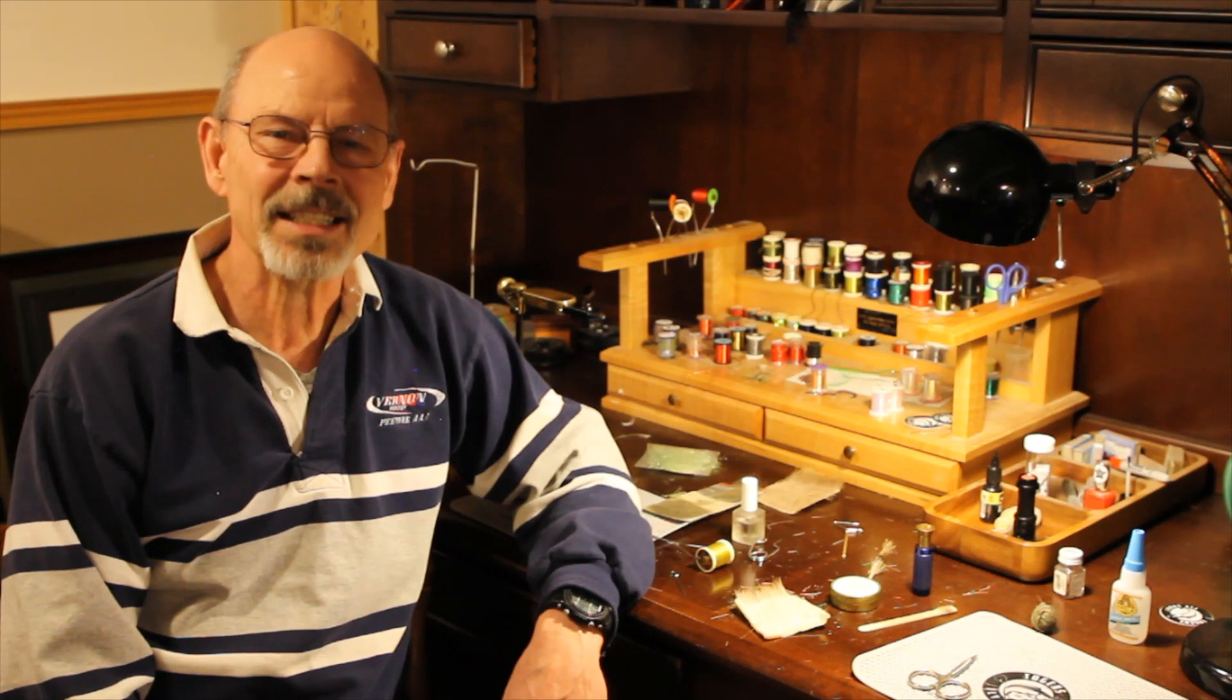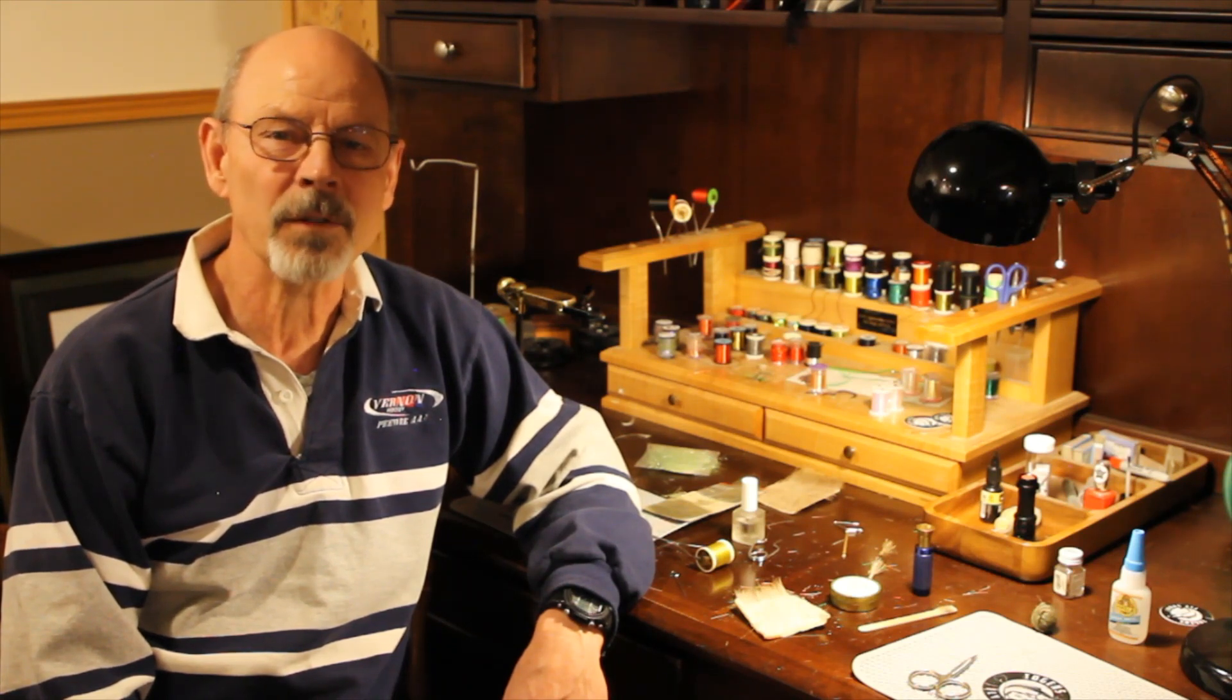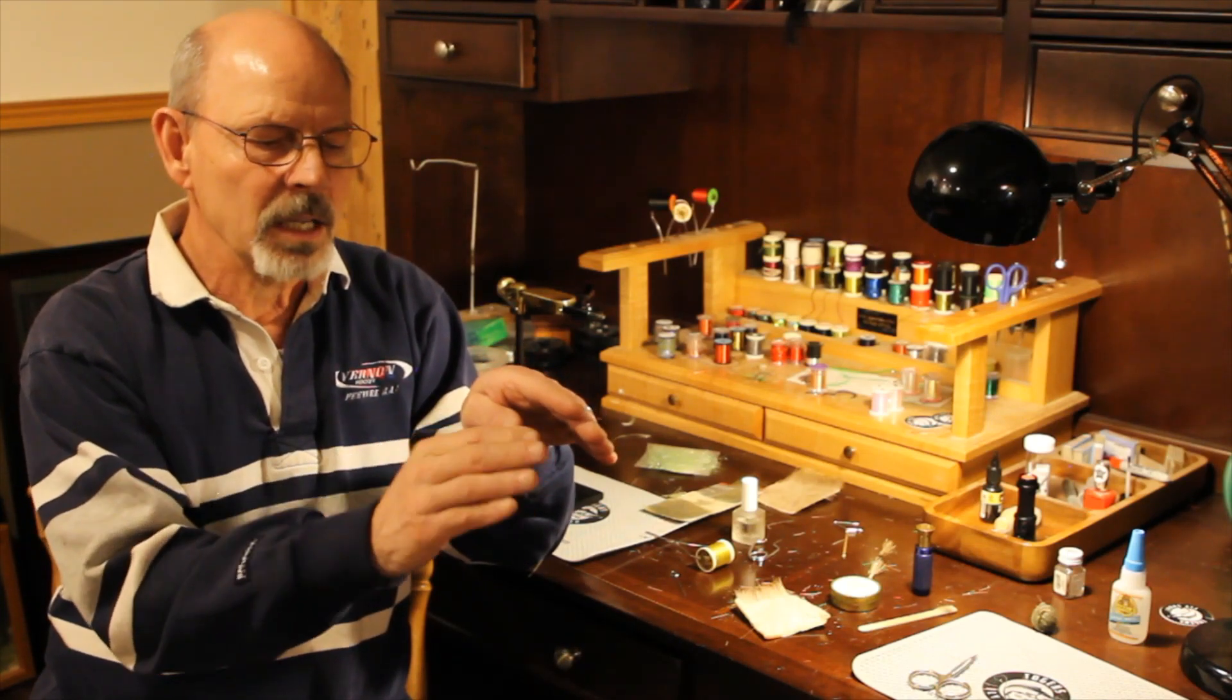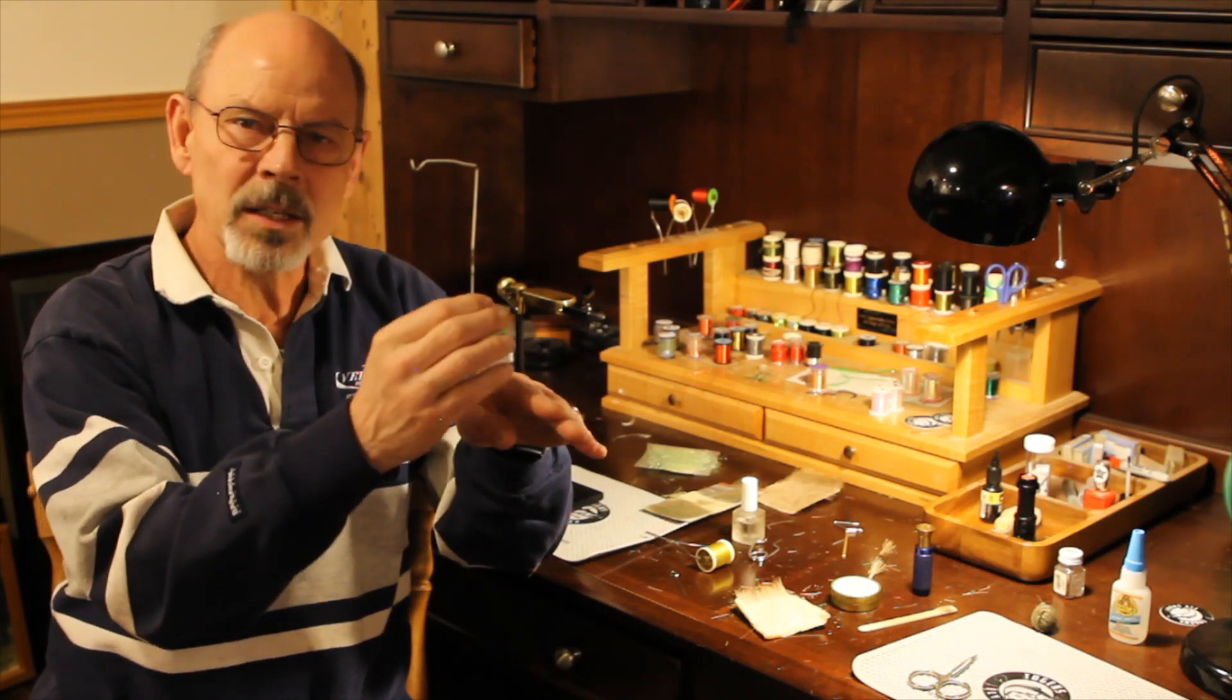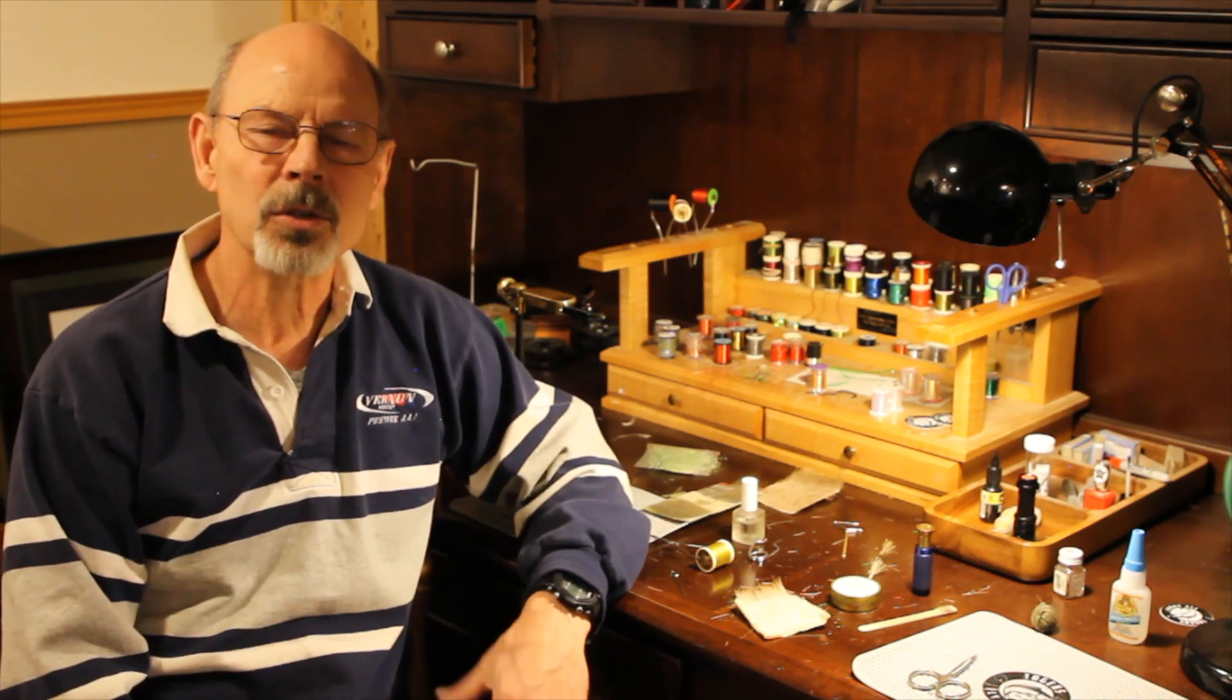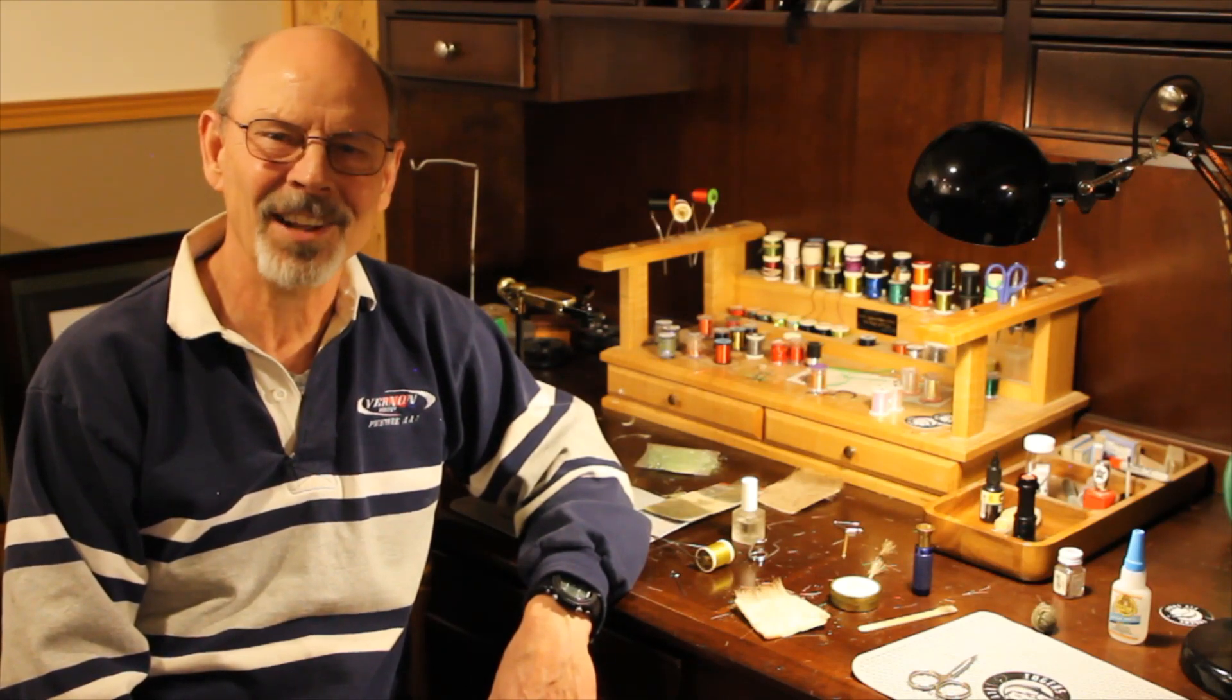The Caddisfly Emerger in its second phase has some distinct elements that we need to include in our flies. Let's take a look at the insect for a moment. As the pupa floats in the surface film, its husk begins to split along the back. The adult insect is trying to propel itself up and forward out of that husk. We have some wings showing and the legs are struggling on the surface film trying to free itself from that husk. These are all important elements. So let's take a look at the materials you're going to need to tie this fly.